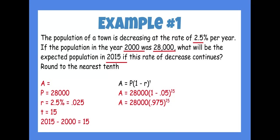Plug that into your calculator: 28,000 times 0.975 to the 15th power. Remember to use your caret button on the calculator. You should get that long number, but they said to round to the nearest tenth, so we need to bump that five up to a six because of the seven next to it. We got 19,152.6 as the population.